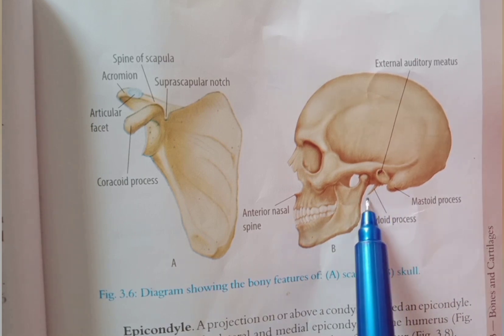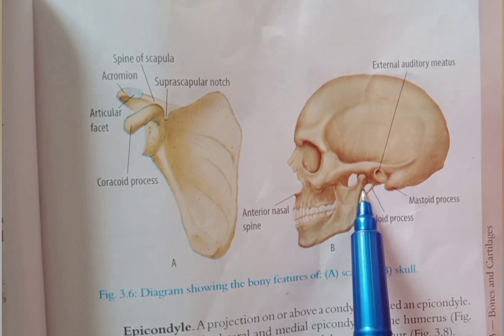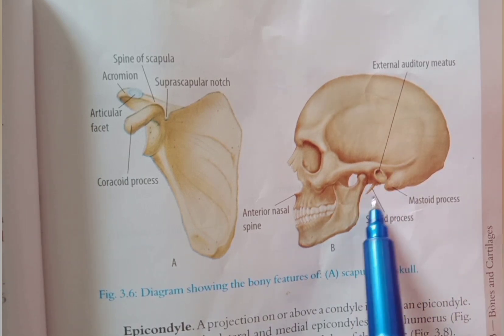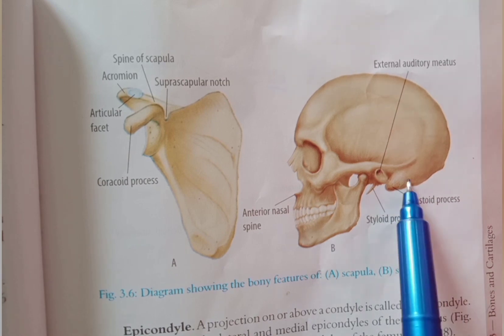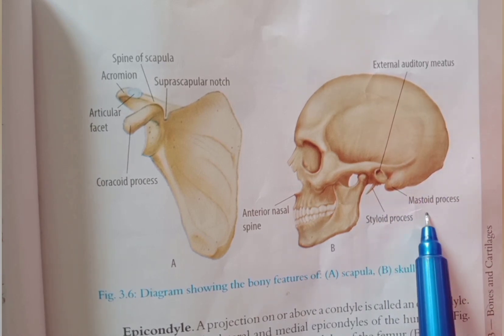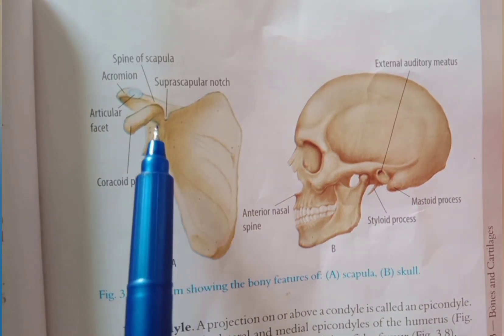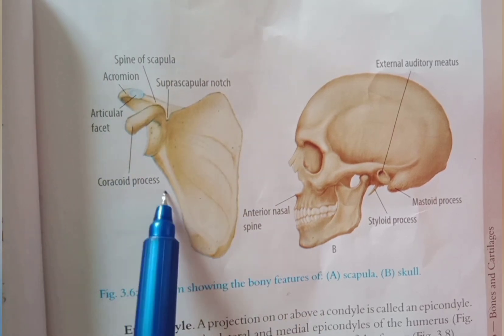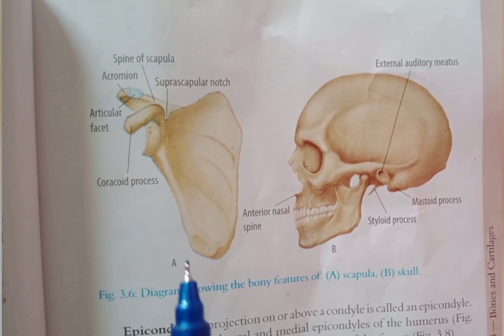This is a styloid process — it is a point-like projection of the temporal bone. This is a mastoid process — it is a rounded projection of the temporal bone. This is the scapula — it has a crow-like projection called the coracoid process.